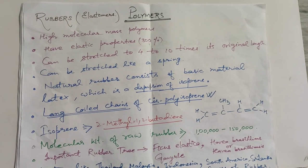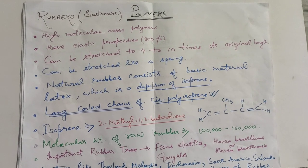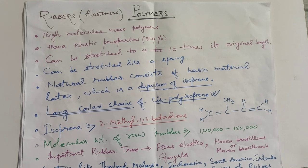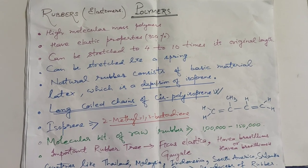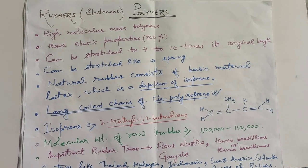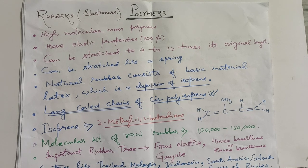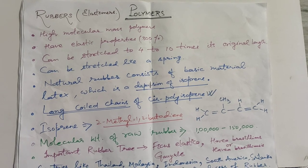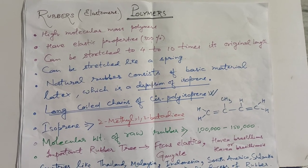The molecular weight of raw rubber is 1 lakh to 1 lakh 50 thousand. The important rubber trees are Ficus elastica, Goyuls, and Hevea brasiliensis, etc.